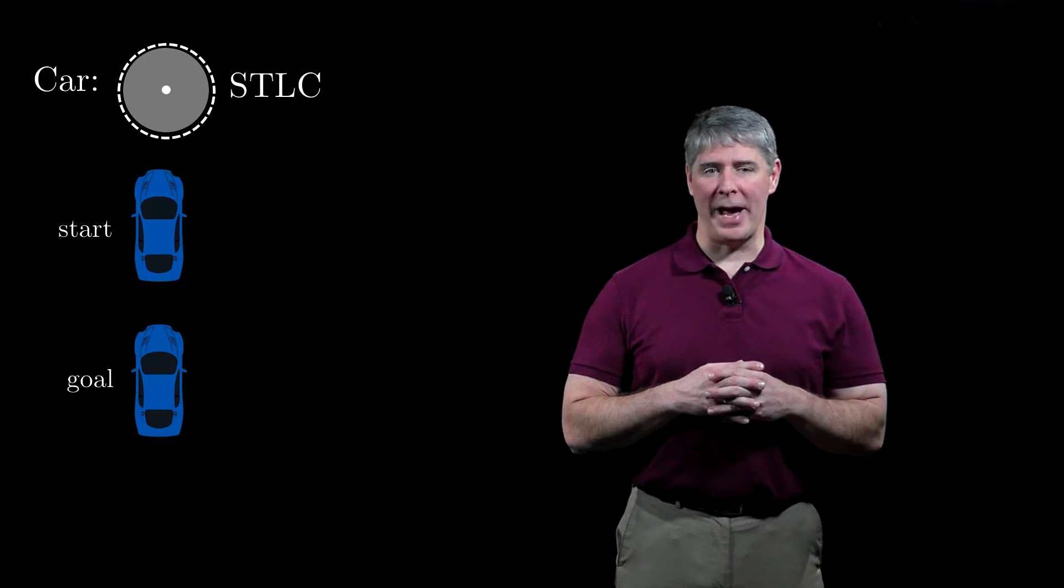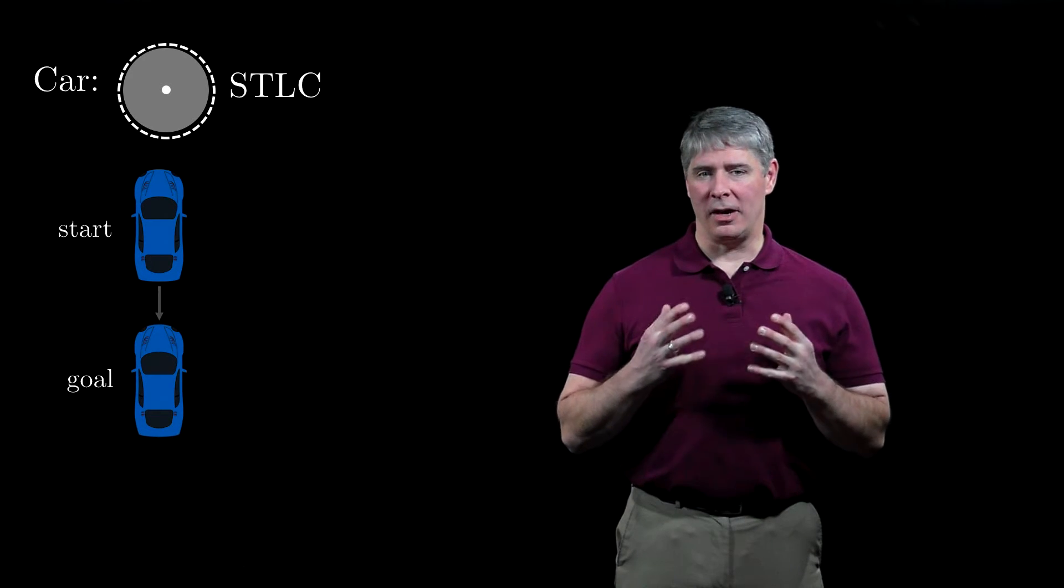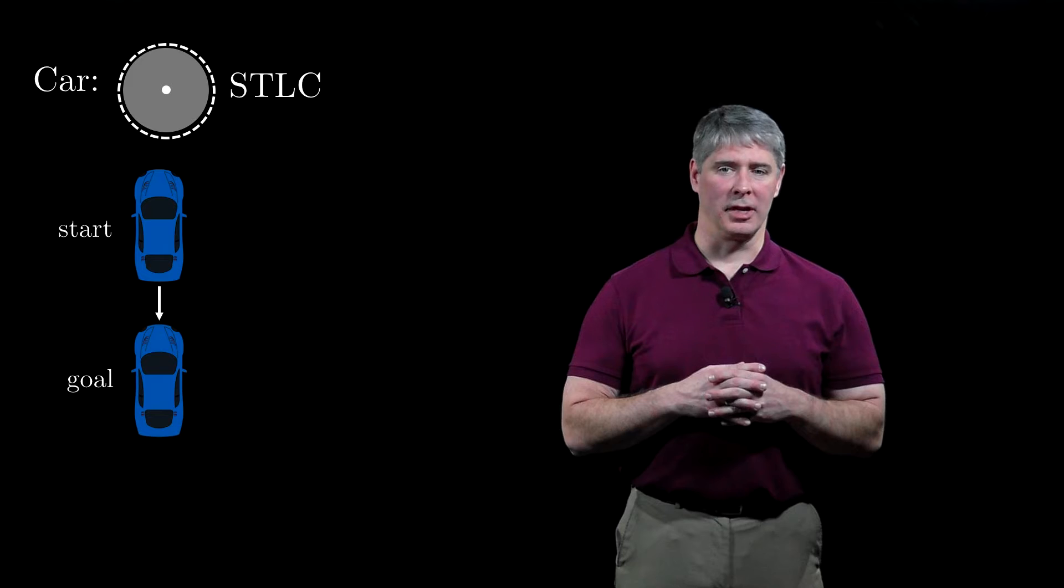A car provides a good example of the small-time properties. A typical car is STLC at every configuration in its three-dimensional configuration space. For example, if the goal is to move backward a short distance, the car does not have to move far away to accomplish this.